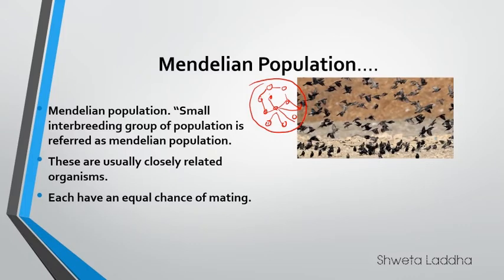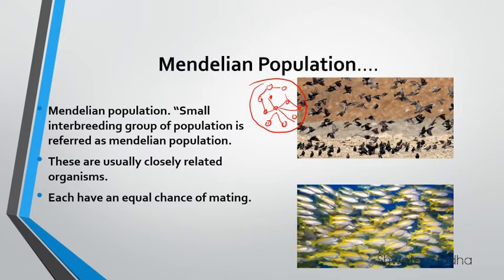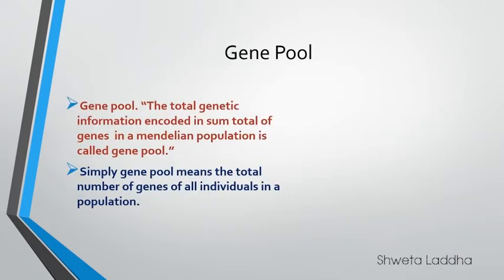For example, in this picture the birds staying in this area are morphologically similar and they can interbreed among themselves, so they form a Mendelian population. Similarly, this shoal of birds is morphologically similar, stays in this area at a time, and they have an equal chance of mating with each other — so they also form a Mendelian population.